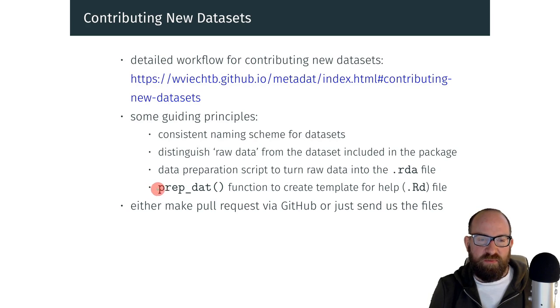Finally, we have written a function, the prep function, which helps people to document their dataset. For each dataset, there needs to be an rd file, and this is the help file for the dataset. Not everybody is familiar with how to write these rd files, so the function creates a template that can be completed by the person contributing a dataset. Once you have created all these files—the raw data file, the data preparation script, the rd data file, and the help file—then you can either make a pull request via GitHub, or if you're not familiar with the Git workflow, you can just send us the files and we will include them in the package.